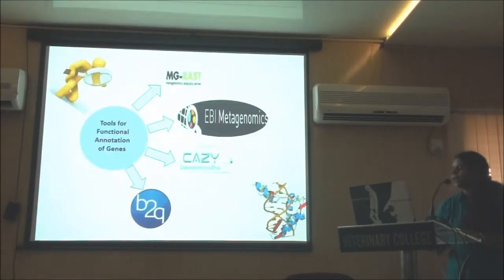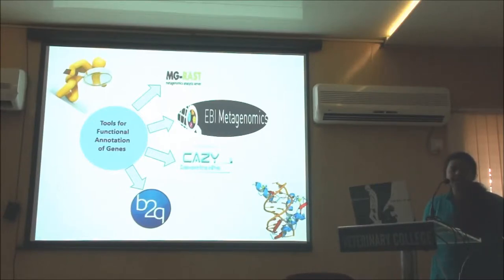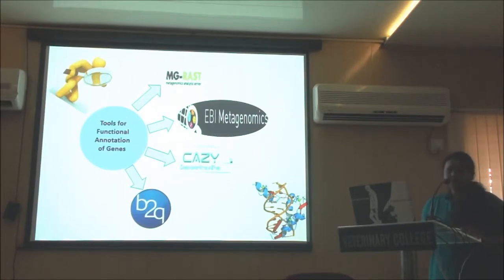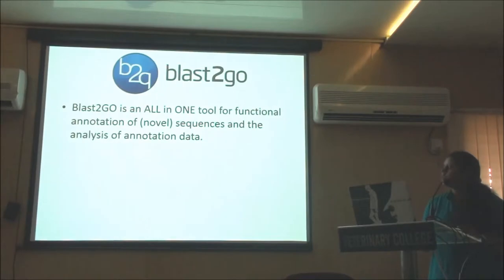For functional annotation of the genes or data we have obtained, some of the tools are: MG-RAST, EBI Metagenomics, CAZy — that is carbohydrate active enzymes — and Blastigo. MG-RAST and EBI you already know well, as they have been covered by my colleagues. I will take some introduction to CAZy and then Blastigo. Blastigo is an all-in-one tool for functional annotation of novel sequences and analysis of annotation data.